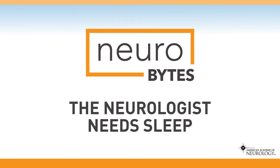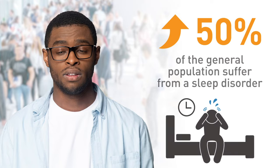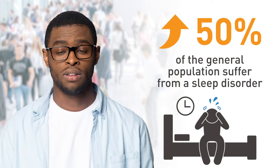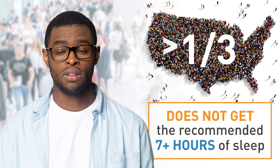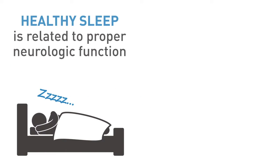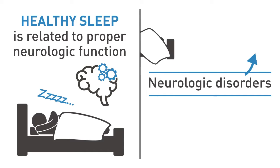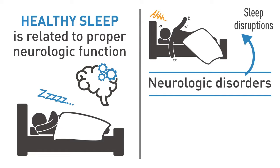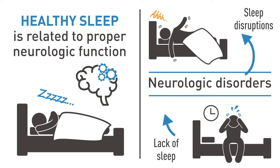By some estimates, upwards of 50% of the general population suffer from some sort of sleep disorder. Greater than one-third of the United States population doesn't get the recommended seven or more hours of sleep, which prompted the CDC to declare sleep deprivation a public health epidemic. Healthy sleep is related to proper neurologic function, with many neurologic disorders resulting in sleep disruptions and, similarly, lack of sleep contributing to the development and progression of neurologic disorders.